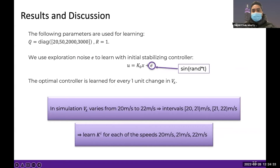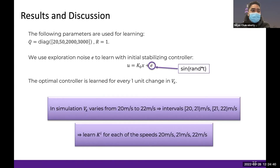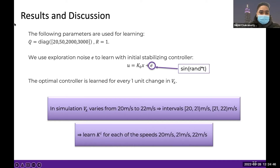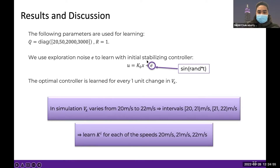Here are some results obtained by incorporating our optimal controller, optimal lane change decision making, and gain scheduling in SUMO simulation. The Q and R matrices are chosen accordingly. For learning, we use exploration noise E with an initial stabilizing gain K0. We learn the optimal controller for every 1 m/s change in the longitudinal velocity. In the simulation, VX varies from 20 to 22 meters per second, so we define intervals 20-21 m/s and 21-22 m/s.